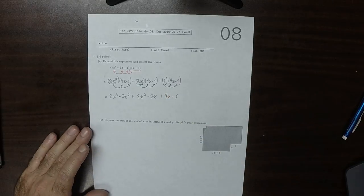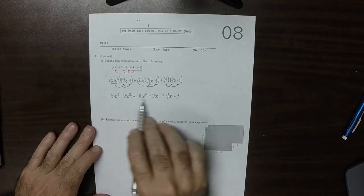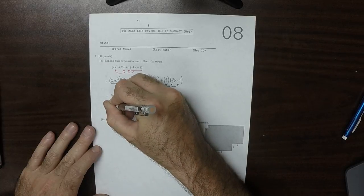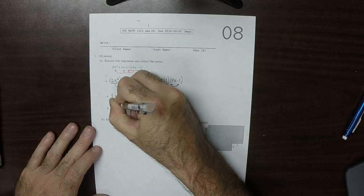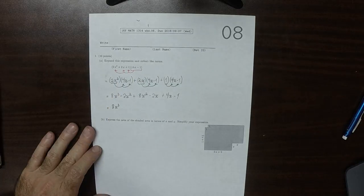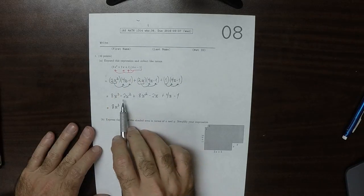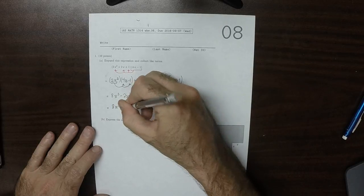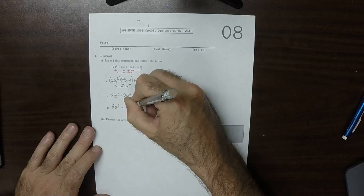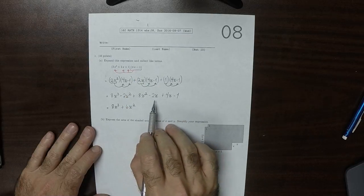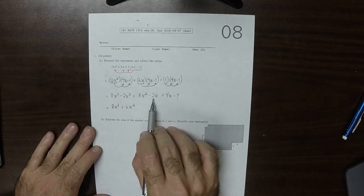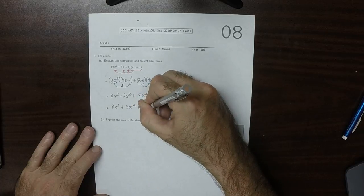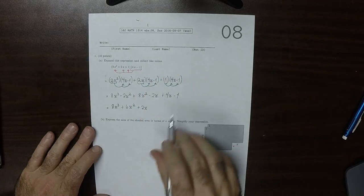So now let's simplify and collect. So cube is the highest of all the degrees, and that's the only one. So that would be 8x cubed. Squares are next. So minus 2 and plus 8, so that's plus 6x squared, and then plus 4x minus 2x, so that's plus 2x, and then minus 1.